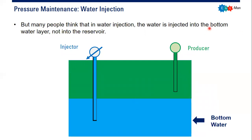Many people think that if we are doing water injection, it means we inject water not into the reservoir but into the bottom water layer. In the schematic, we have the injector, the producer above, the reservoir, and the bottom water layer below. Many people think water injection means injecting water into the bottom water, not into the reservoir. In many examples this is correct — companies do inject water into the aquifer or bottom water — but we can still perform water injection for pressure maintenance by injecting water into the reservoir.